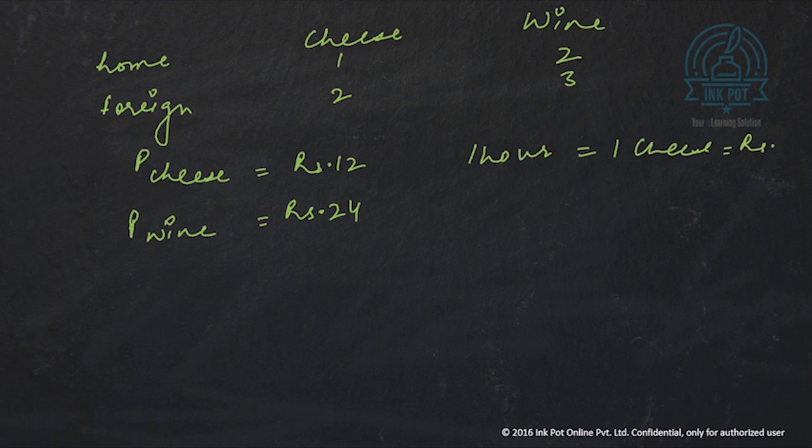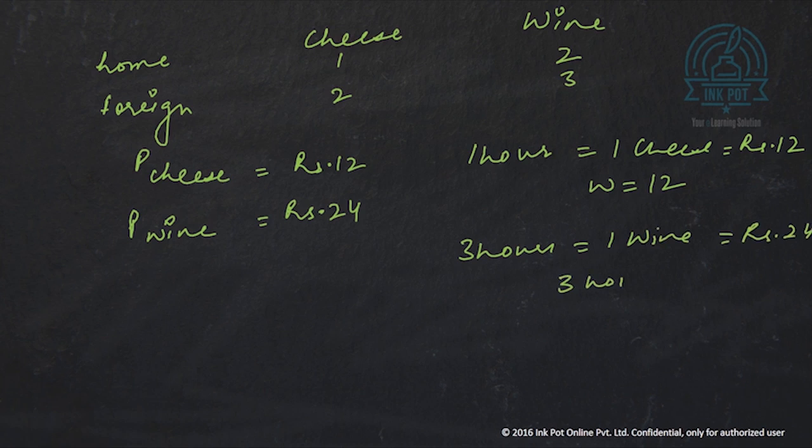In the foreign country, 3 hours can produce 1 unit of wine which is worth Rs.24. So in foreign country, 3 hours is worth Rs.24, which means W star which is 1 hour is worth Rs.8. So then the differential becomes W upon W star which is 12 by 8 which is 3 by 2 which is 1.5.